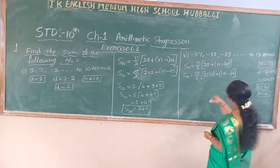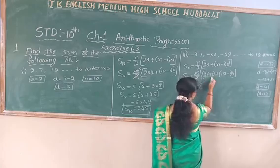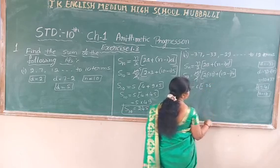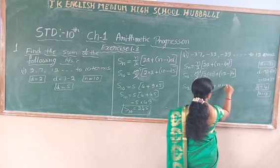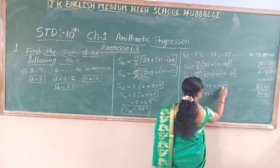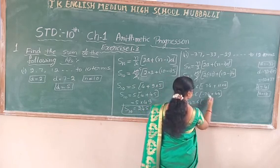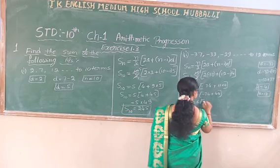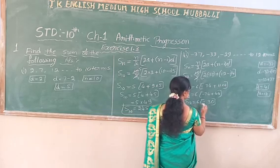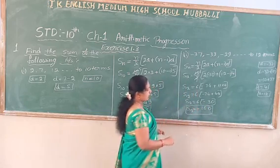Substitute all the values and simplify. Sum of 12 terms: 2 divided by 2 is... then 6 into — negative side — minus into plus gives minus 74 plus 11 into 4 equals 44. Subtracting: minus 74 plus 44 — the bigger number is minus — 74 minus 44 is 30, so 6 into minus 30 equals minus 180. Sum of 12 terms of this AP is minus 118.